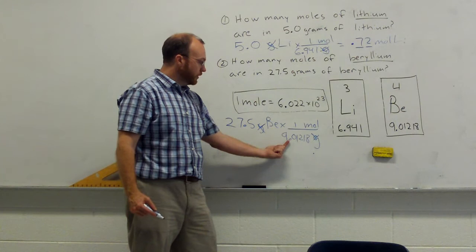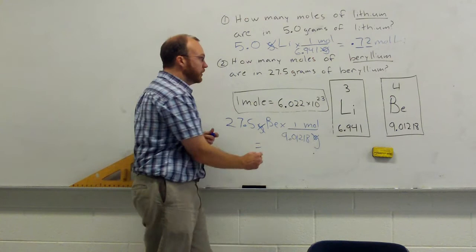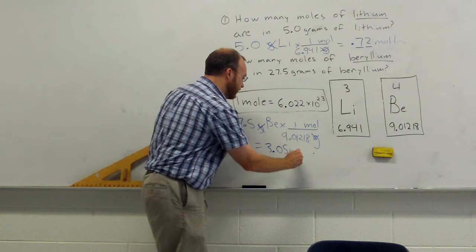This has three significant figures. This has more than three. So, we're going to round our answer off to three significant figures. And when we do so, we get 3.05 moles of beryllium.